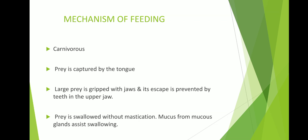As you know, frog is a carnivorous animal. Carnivorous means they are flesh-eating animals. So frog feeds on crustaceans, insects, worms and spiders.